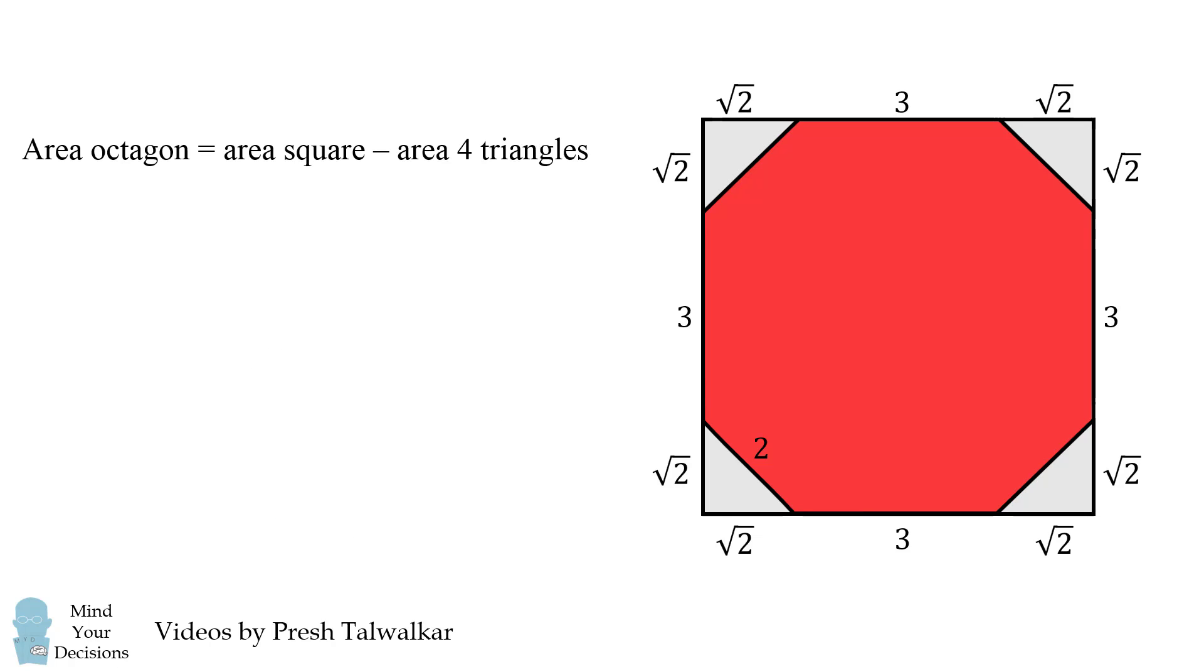So we can calculate the area of the octagon is equal to the area of the square minus the area of 4 of these triangles. We can calculate each of these areas pretty routinely.